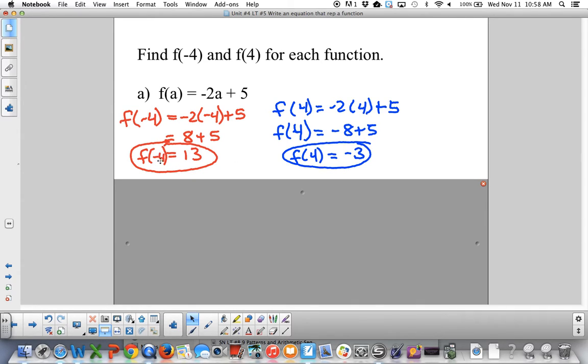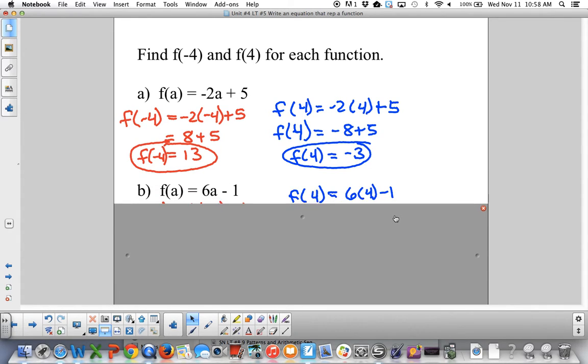Negative 4, 13 is an ordered pair. And 4, negative 3 is an ordered pair. Try that now with this equation. f of a equals 6a minus 1 for both negative 4 and 4.